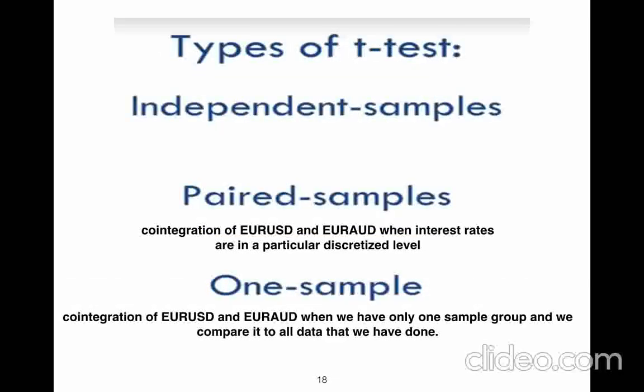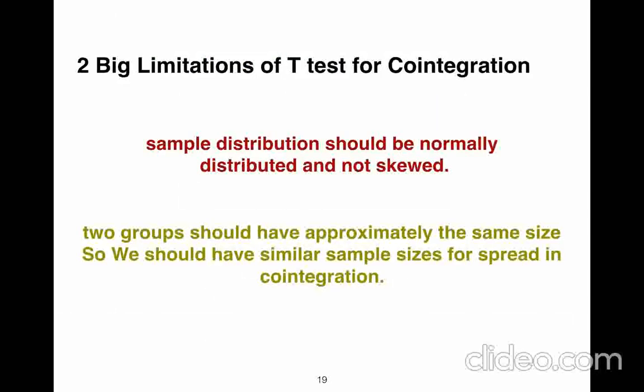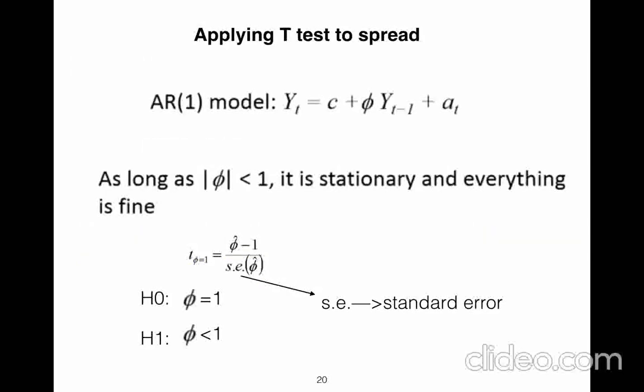So we have different types of t-tests, pair samples, one sample. There are two big limitations of tests for cointegration. Sample distribution should be normally distributed and not skewed. Two groups should have approximately the same size, so we should have similar sample sizes for spreading cointegration.